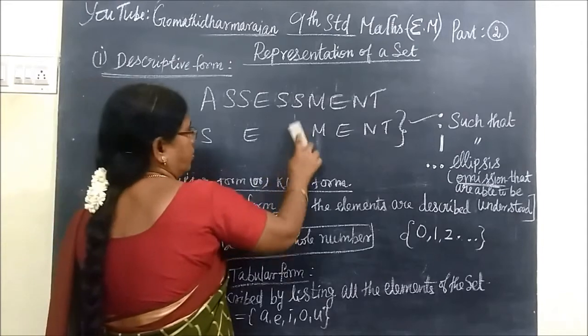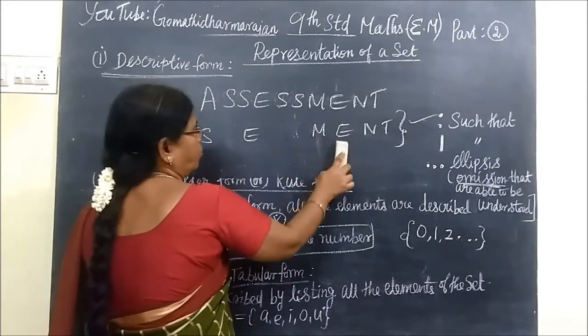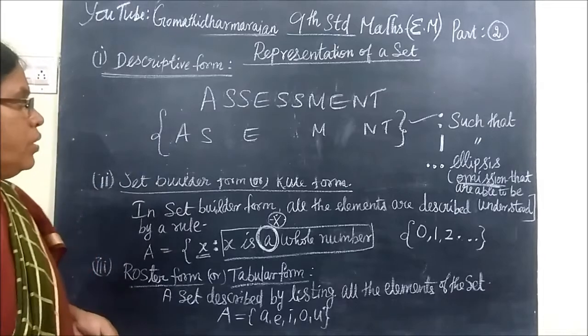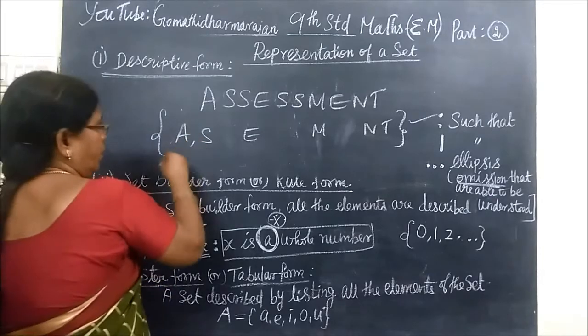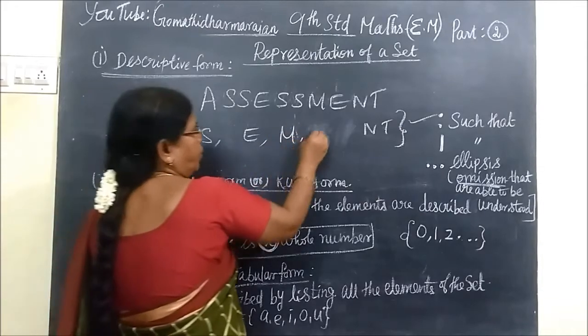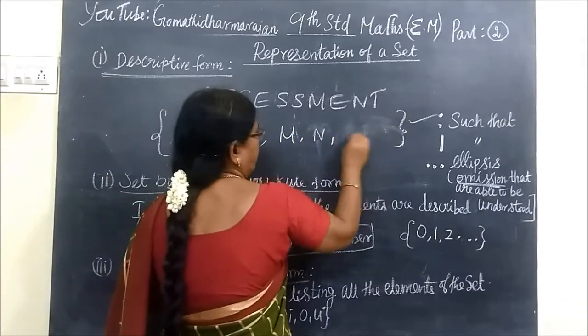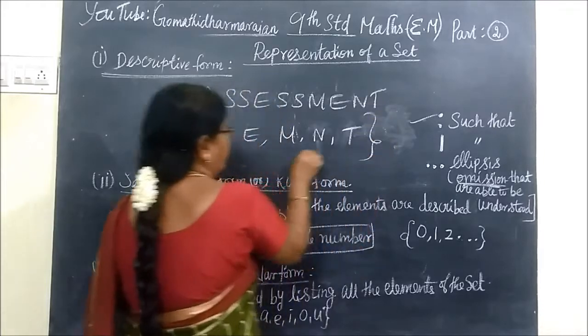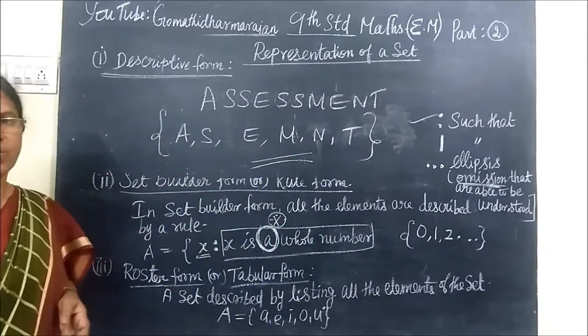Here also, this you repeat. The letter E comes twice. So A, S, E, M, N, T. In this way only, you have to write the roster form.